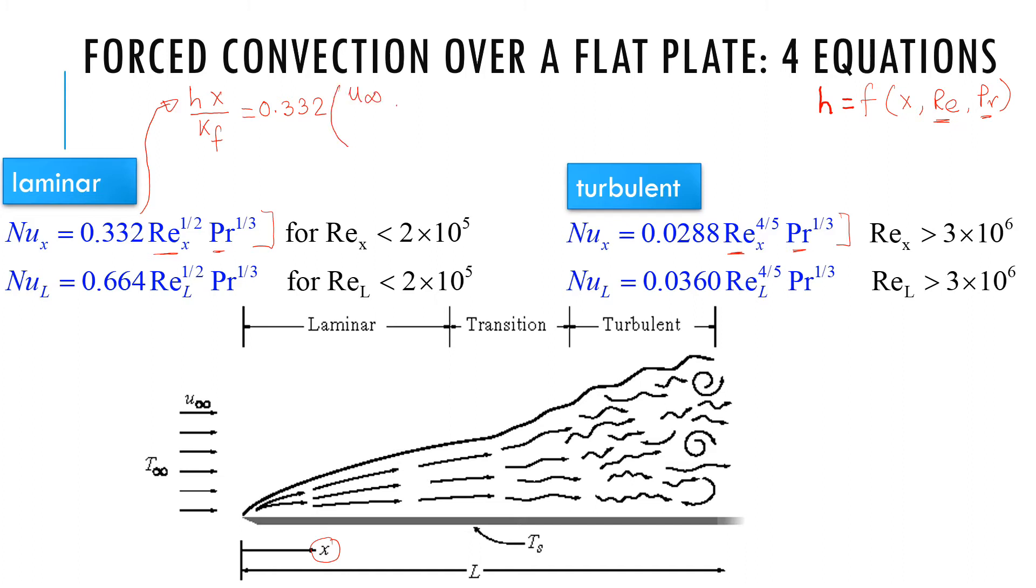And Prandtl number mu C_p over K, raised to the power one third. All of these are for fluid. So the point I want to make is we finally have a formula for H where we simply plug in all the values and we get H. It is that simple.